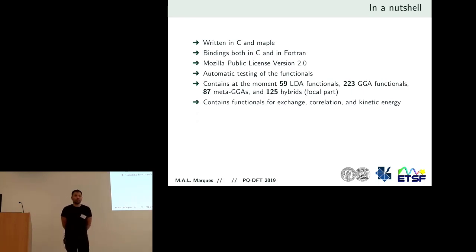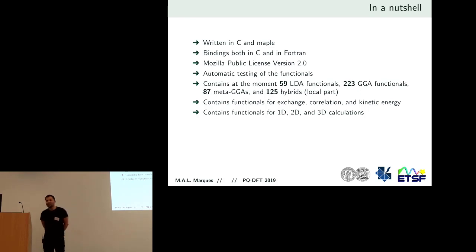Then we have functions for exchange correlation and the kinetic energy, because there are also what people call orbital free DFT, where you need functions for the kinetic energy. There are perhaps 30, 40 functions for the kinetic energy, if you want. And there's also function for exchange correlation together, exchange separate, it depends a little bit on the actual functional. Then we have functions for 1D, 2D and 3D calculations, because some people also run model systems in one dimension and two dimensions. We don't have any for 4D. Actually, I was curious if we could do a LDA for four-dimensional gas, but I don't really find the physical justification to do it. That would be fun, I think.